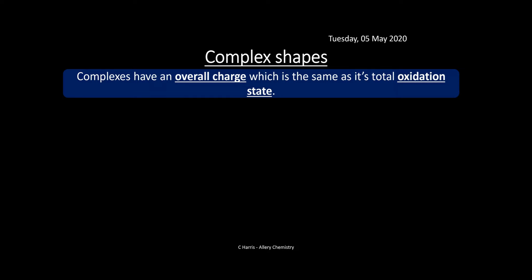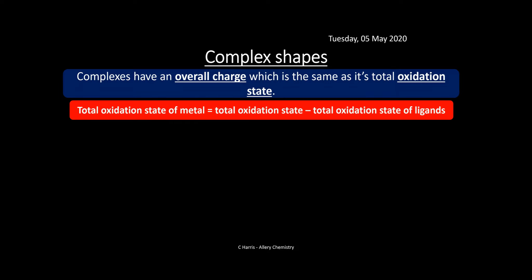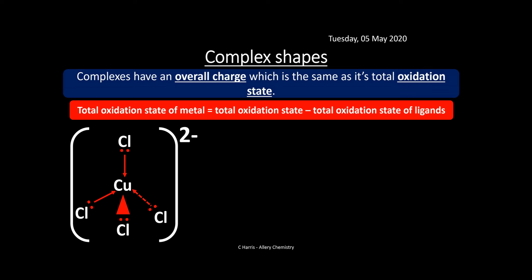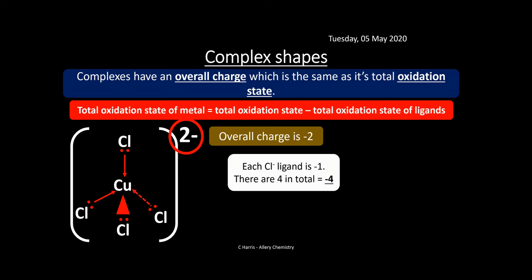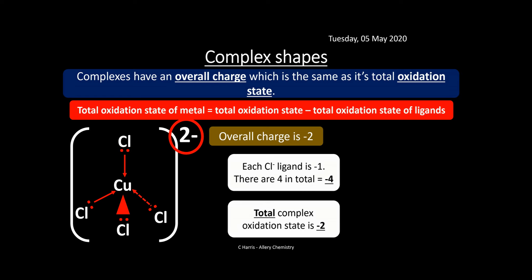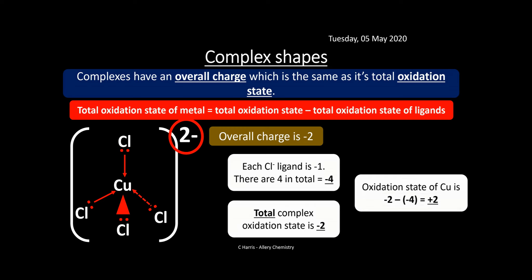Complexes have an overall charge equal to their total oxidation state. The oxidation state of the metal equals the overall charge of the complex minus the total oxidation state of the ligands. For example, [CuCl₄]²⁻ has an overall charge of minus two. Each Cl⁻ ligand is -1, and there are four, so the total ligand charge is -4. Therefore the oxidation state of copper is -2 minus (-4) = +2.